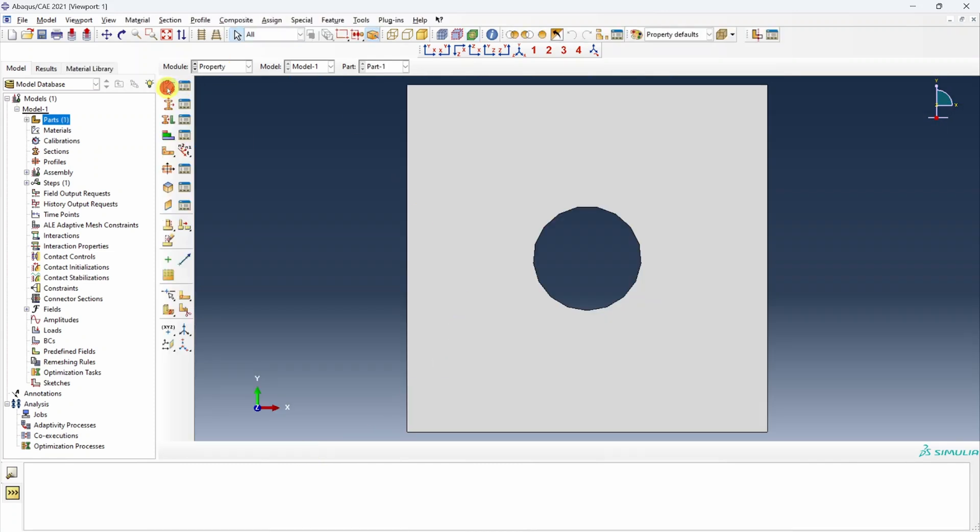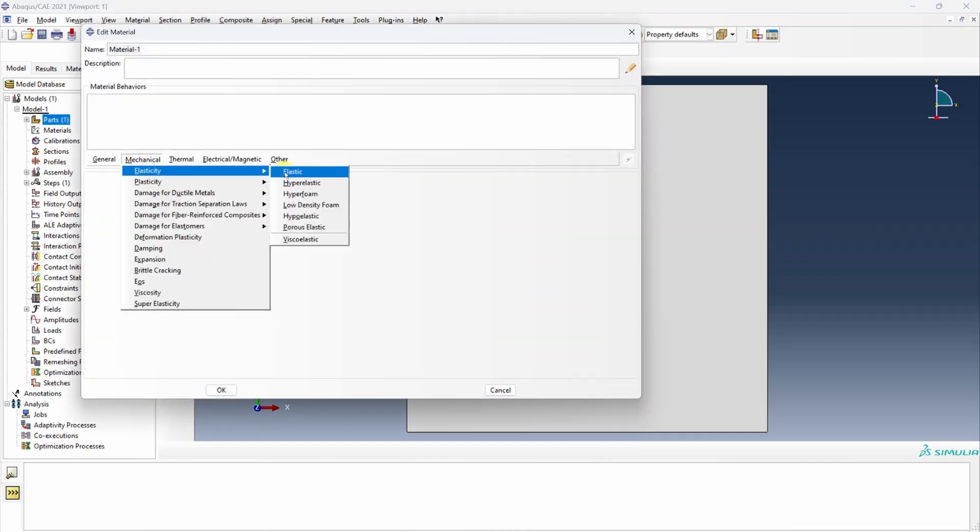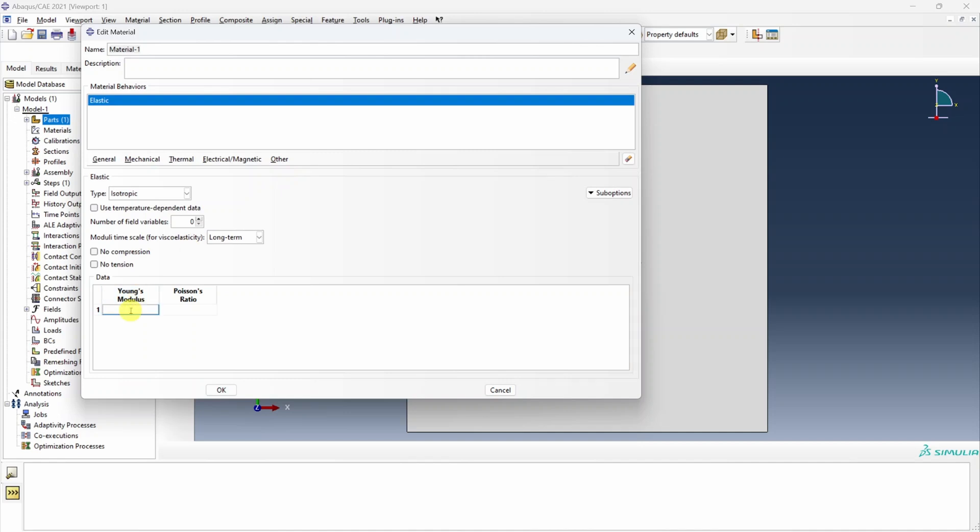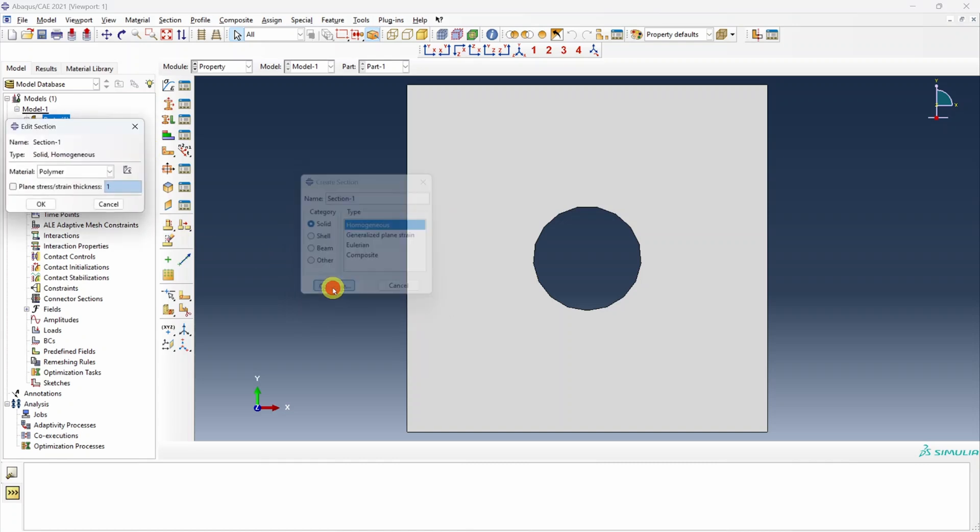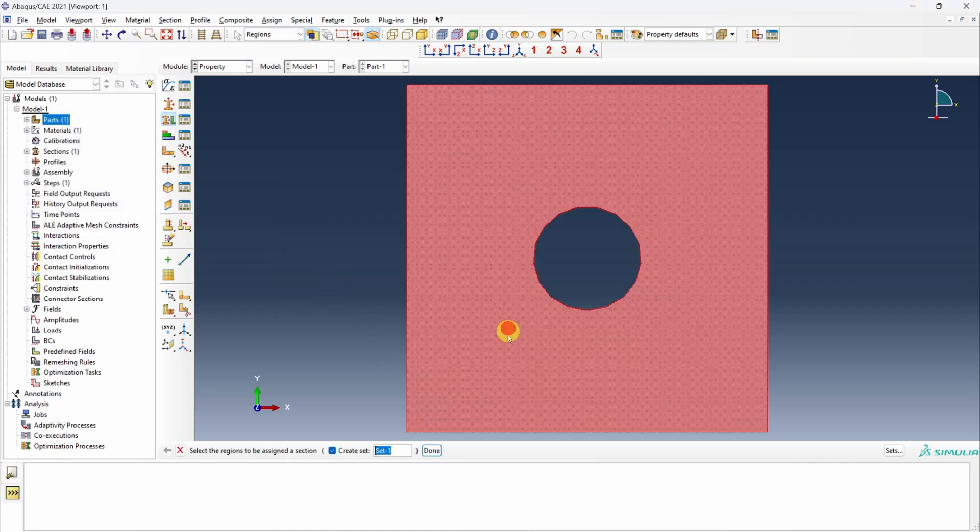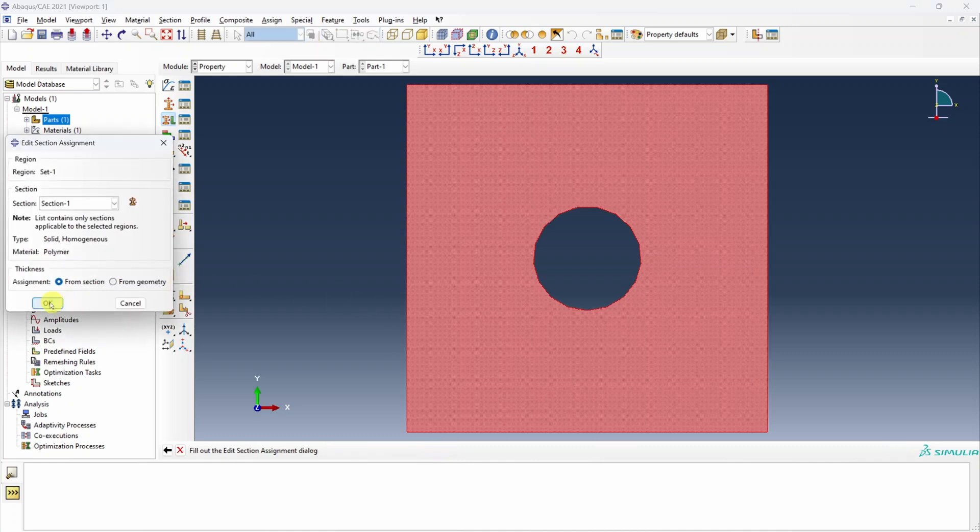Next let's create property, elastic material. Young's modulus is 100 MPa and Poisson's ratio 0.47 and I will name it as polymer as well. Now let's create a section. Everything is default. I am not changing anything over here and then assign the section to the part.